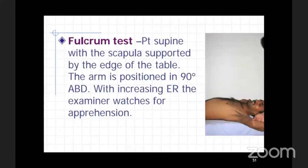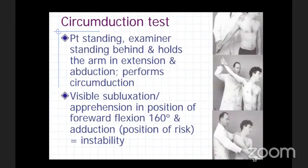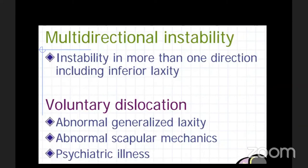The fulcrum test is performed with the patient supine, scapula supported at the edge of the table, arm at 90 degrees of abduction with increasing external rotation, and the examiner watches for apprehension. The jerk test is performed supine with 90 degrees of forward flexion and elbow at 90 degrees; the examiner applies a posterior-directed force holding the forearm. The circumduction test — patient standing, examiner circumducts the arm in extension and abduction; visible subluxation and apprehension in 90 degrees of forward flexion and adduction indicates instability.